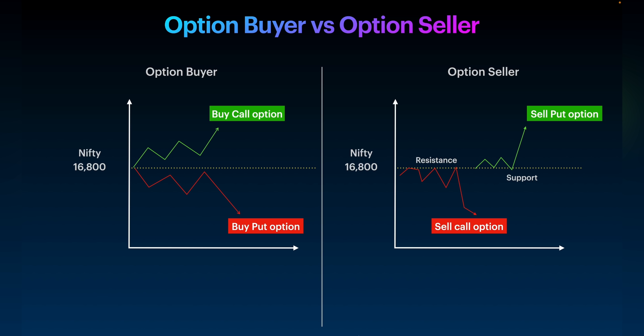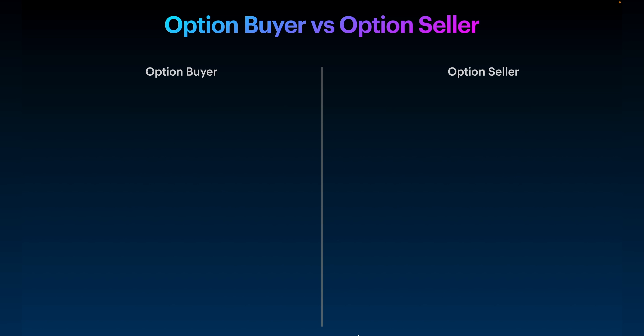Many of you watching this video might find it difficult to decide which is better — option buying or option selling. So we will look into the additional advantages and disadvantages of both. The first advantage of being an option buyer is that the capital requirement is less. For an option seller, the capital requirement is more.